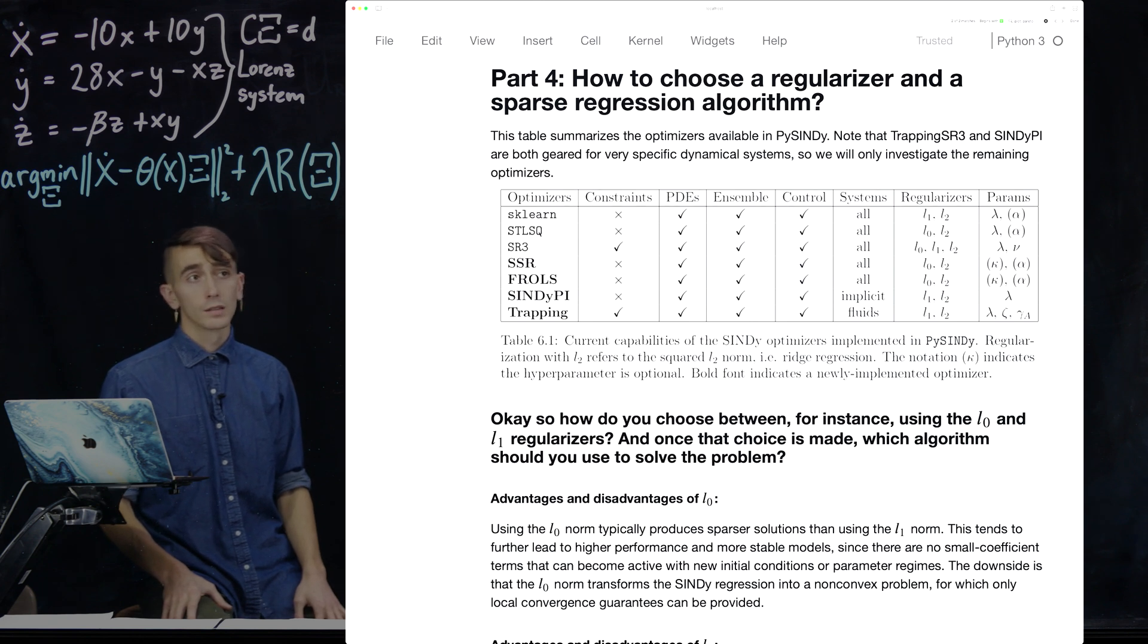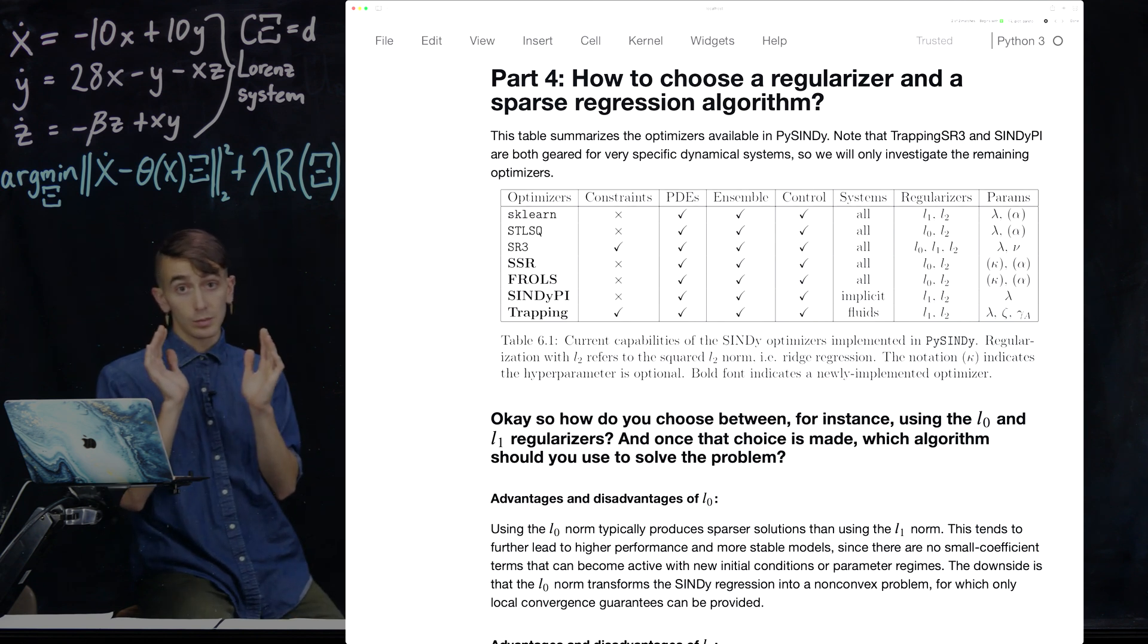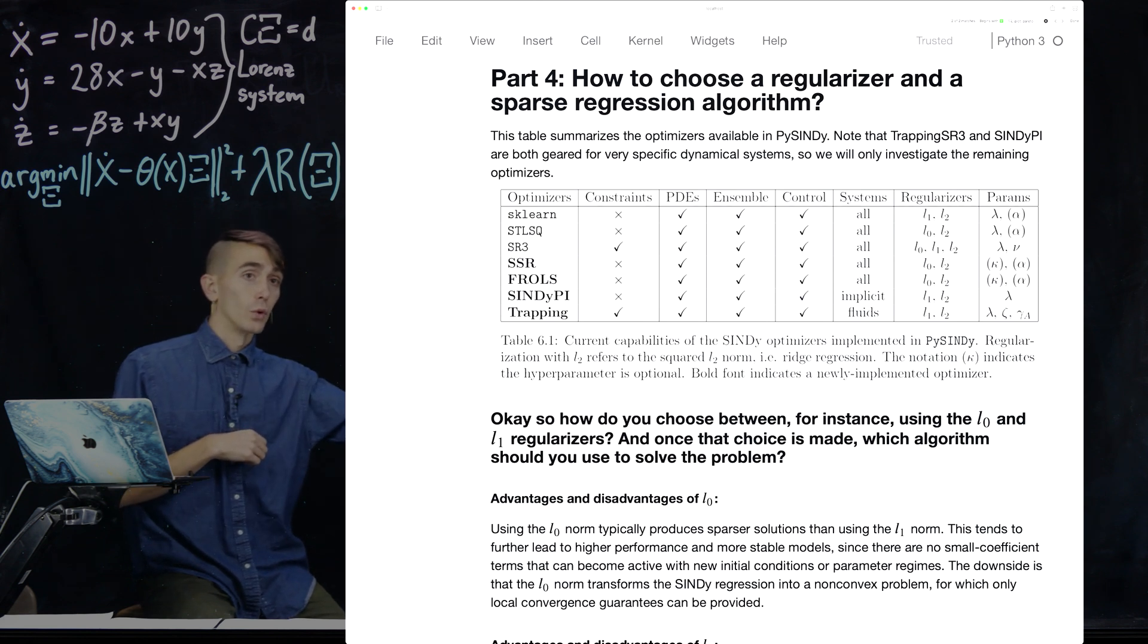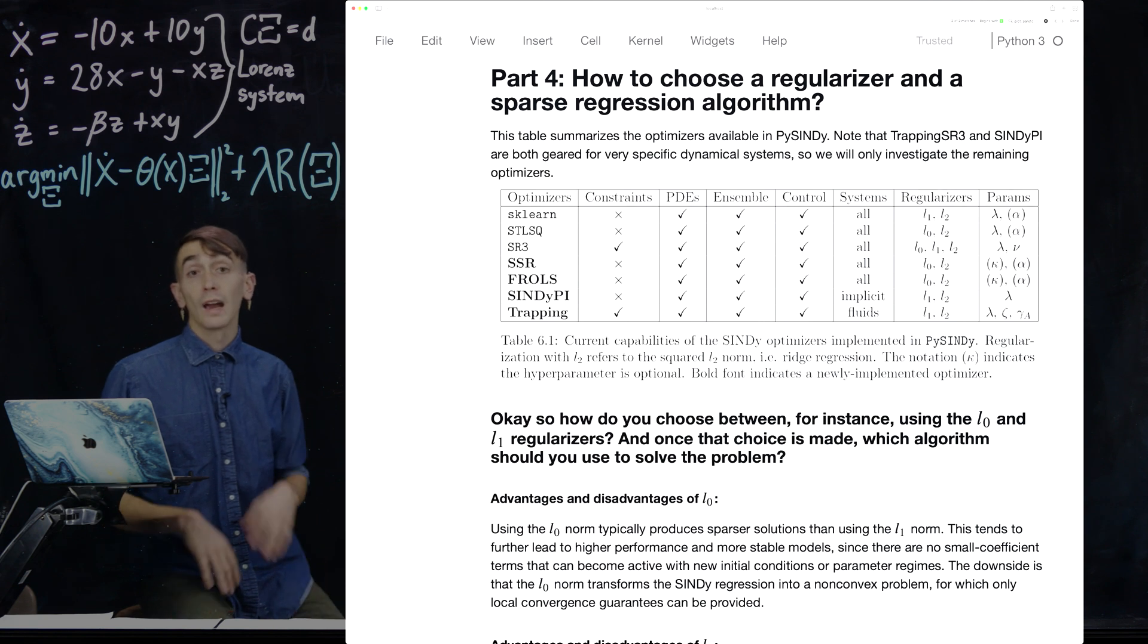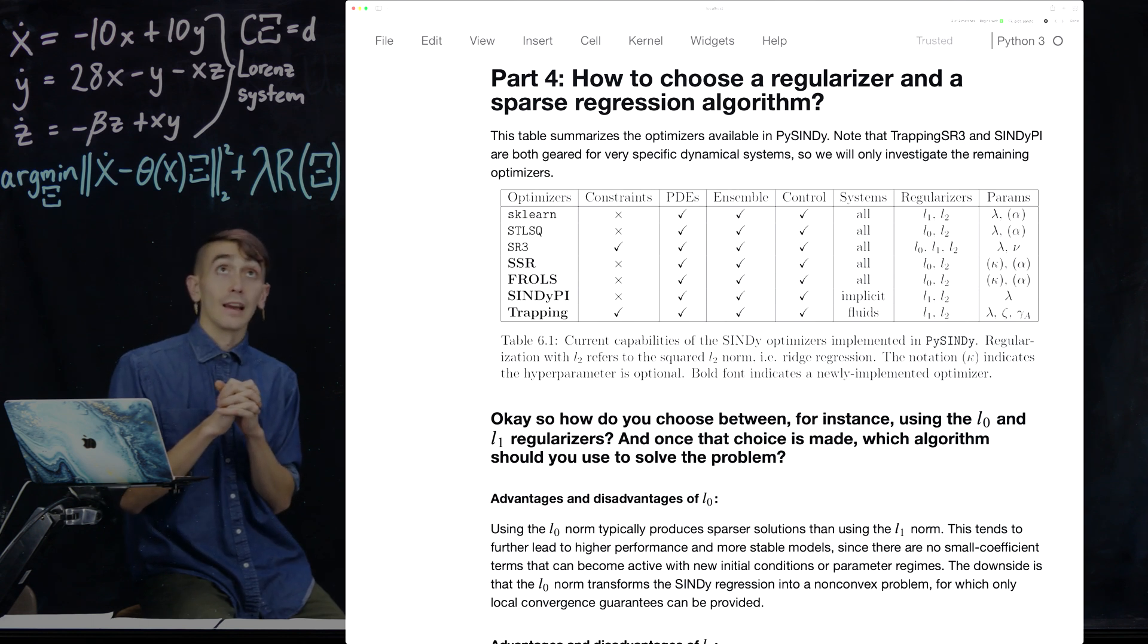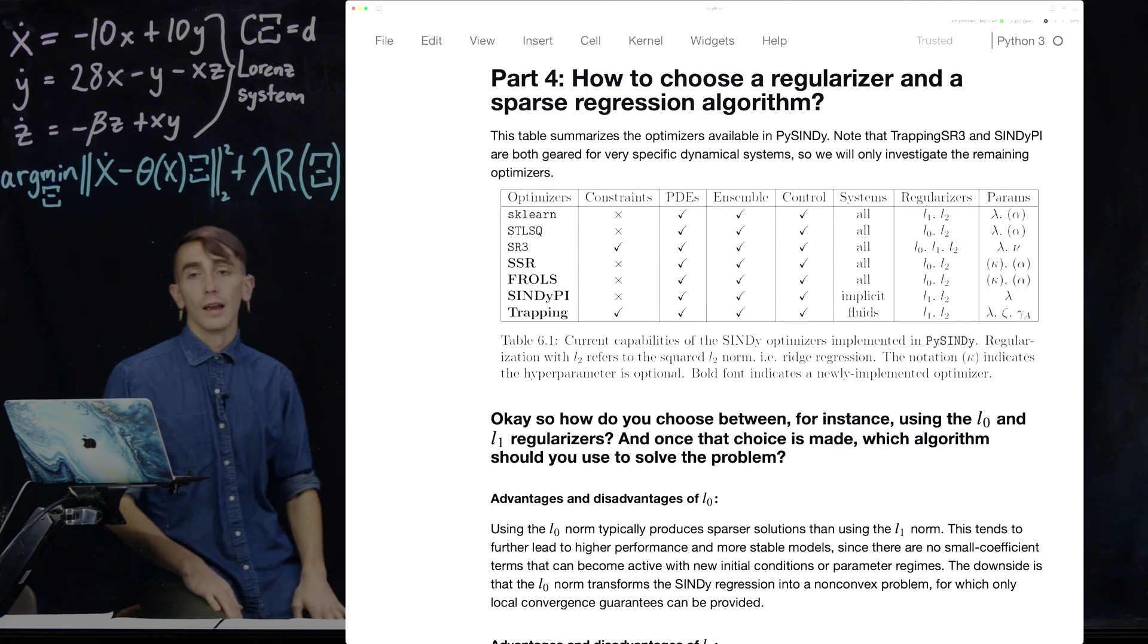And then at the end, I just show some of the hyperparameters that show up in these models. And the hyperparameters, which are in parentheses, means they're optional. And so I just want to point out that, for instance, SSR and Frolls, these algorithms in principle have no hyperparameters. And that's the advantage of these, what are called greedy algorithms, is that there's no hyperparameter. You basically just sort of choose how many non-zero coefficients you want in the model, and it'll just work its way up there. And actually, you don't even have to choose that, because you might consider that a hyperparameter. It'll just sort of truncate terms one by one. And in post-processing, you can sort of pick whatever model you think is the best.